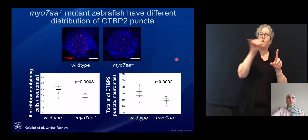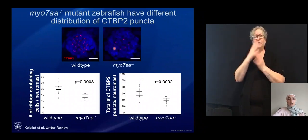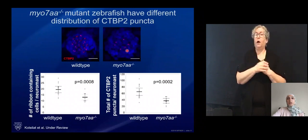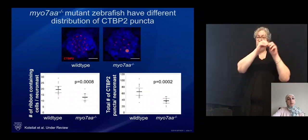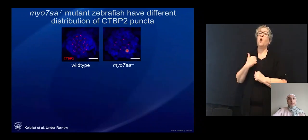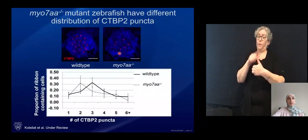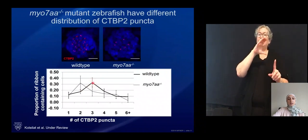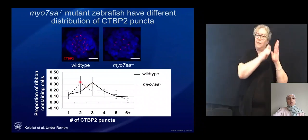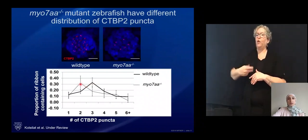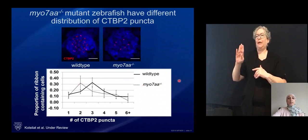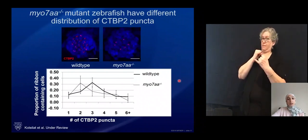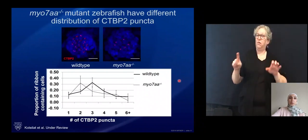As I was going through these images, I noticed that some hair cells have one red dot or two red dots, and I was curious whether there is a difference in the distribution of CTBP2 puncta. Indeed, I found a difference: a majority of wild type hair cells contain three CTBP2 puncta per cell, while in the myo-7a mutants, a majority of hair cells have two CTBP2 puncta. This is significant because the ribbon synapse is essential for the transfer of sound information, so this differing distribution may be contributing to the deafness phenotype.